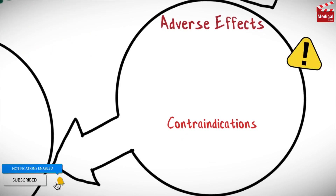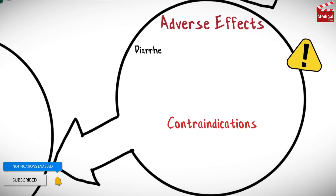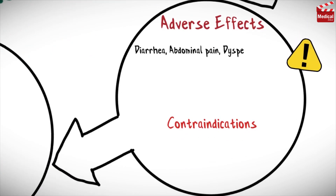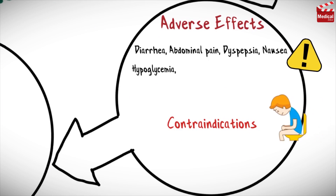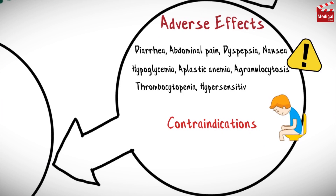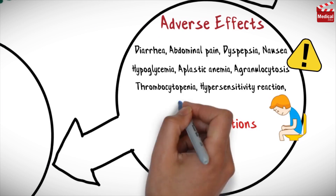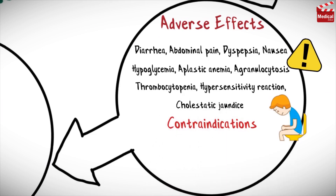Glipizide may cause diarrhea and abdominal pain, dyspepsia and nausea, hypoglycemia, aplastic anemia, thrombocytopenia, hypersensitivity reaction, and cholestatic jaundice.